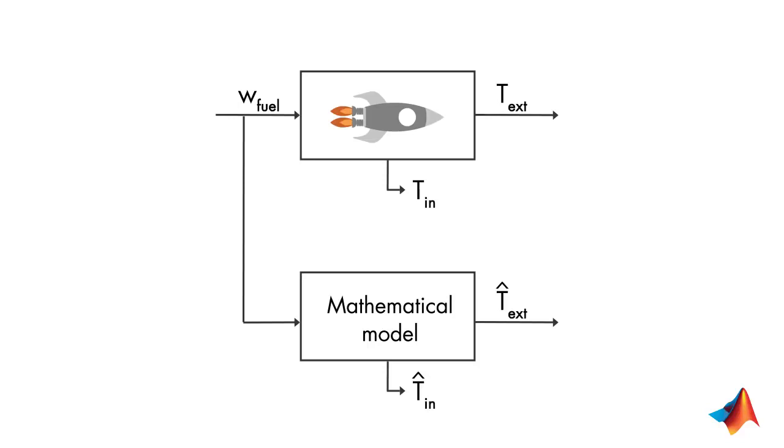Let's see how a state estimator works. Here, our goal is to match the estimated external temperature with the measured external temperature. We know that if these two are equal, then the model will converge to the real system. So, the estimated internal temperature will converge to its true value.